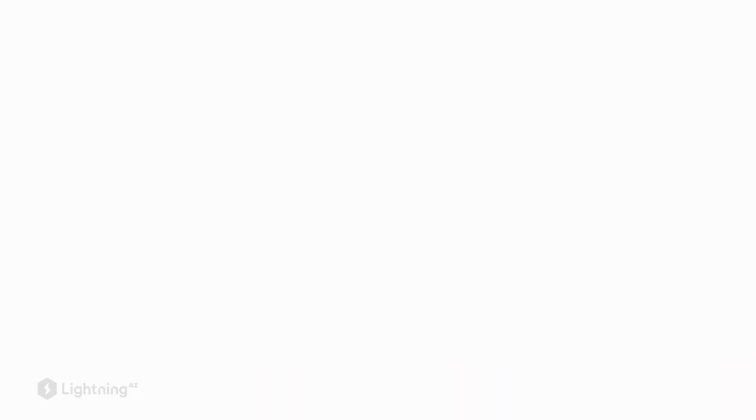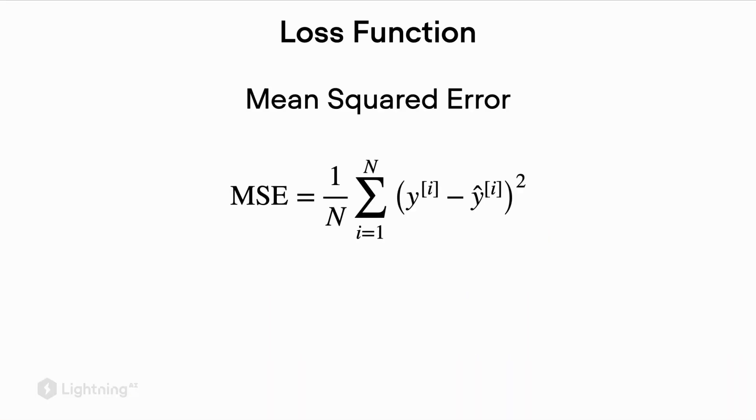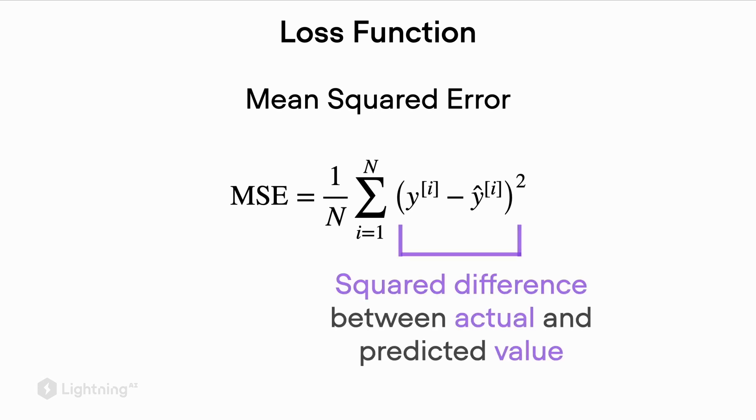So what does the loss function for regression now look like? For classification we usually use the cross entropy loss, and for regression the most commonly used loss function is the mean squared error. The mean squared error computes the difference between the actual target and the predicted target value.